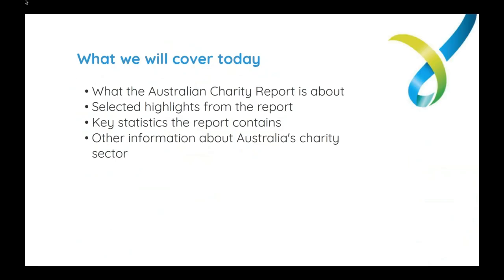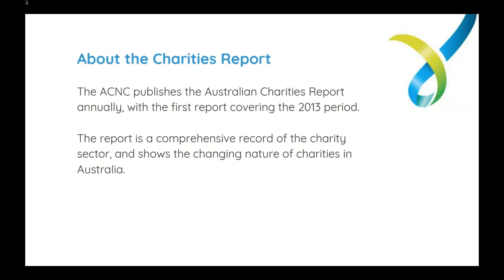What we'll cover today: we're going to have a look at the Australian Charities Report — just what it is and where it comes from. We'll look at some of the select highlights from this most recent report, go over some of the key statistics, and talk about some of the other information about Australia's charity sector that the report uncovered. We do publish the Australian Charities Report every year; the first one came out in 2013, and as we produce more of them we're providing more data and statistics back to the sector.